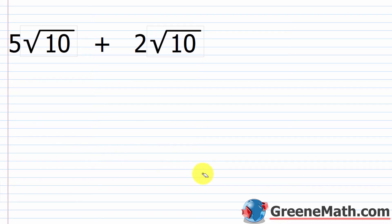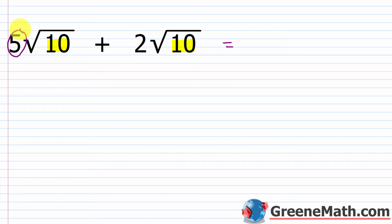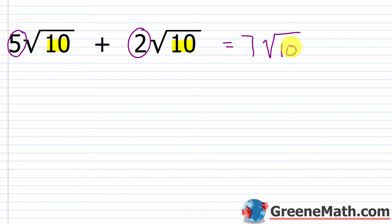Looking at the first example: 5 times the square root of 10 plus 2 times the square root of 10. First, check for like radicals — same index (both square roots) and same radicand (both 10). So we're good. All I'm going to do is add the numbers outside: 5 plus 2 gives 7, and then it's times the common square root of 10. So the answer is 7 times the square root of 10. Think of it as 5 of some quantity plus 2 of the same quantity equals 7 of that quantity.